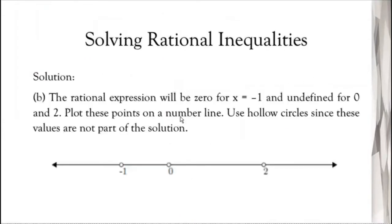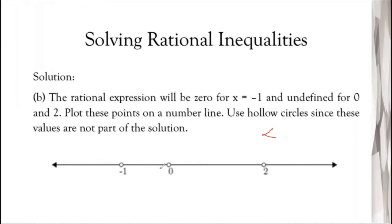Next slide: the rational expression equals 0 for x = -1, and is undefined at x = 0 and x = 2. We plot these points on the number line with open circles. For x = -1, it's an open circle because the symbol is strictly less than — closed circle only applies when there's an 'or equal to'. Obviously 0 and 2 are also open circles since they make the expression undefined.